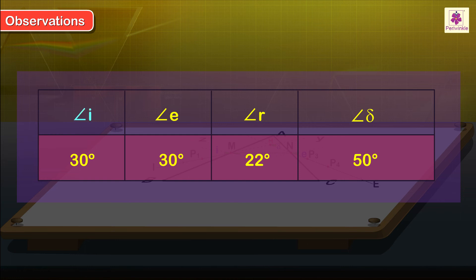Angle of incidence: i = 30 degrees. Angle of emergence: e = 30 degrees. Angle of refraction: r = 22 degrees. Angle of deviation: delta = 50 degrees.